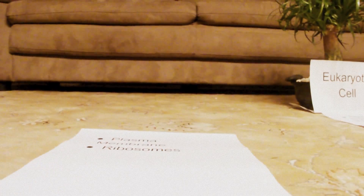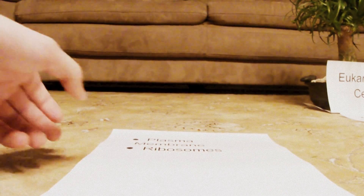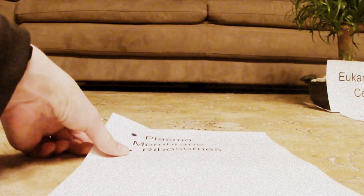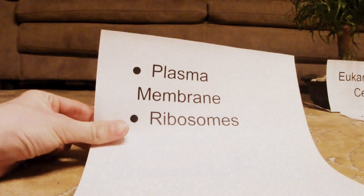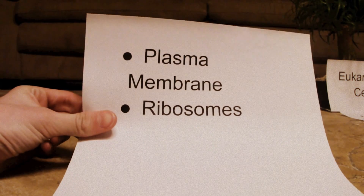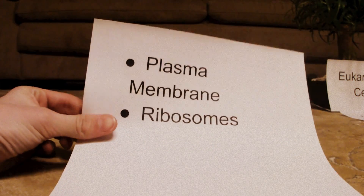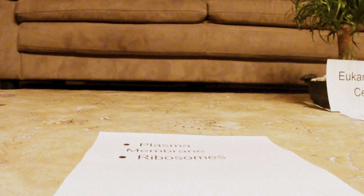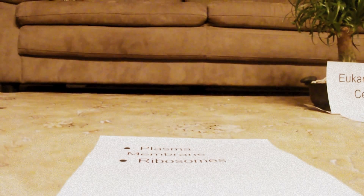Next, we have the things that the prokaryotic cell and eukaryotic cell share. We have the plasma membrane, which controls the movement of various substances, and they also share ribosomes, which make protein.